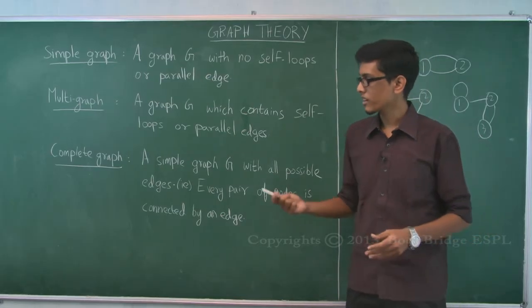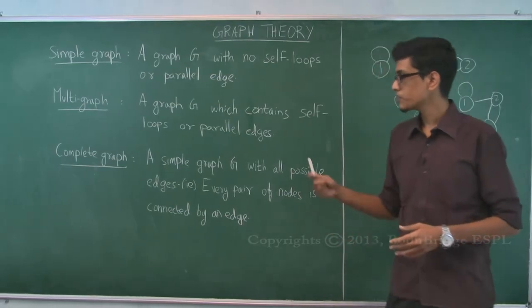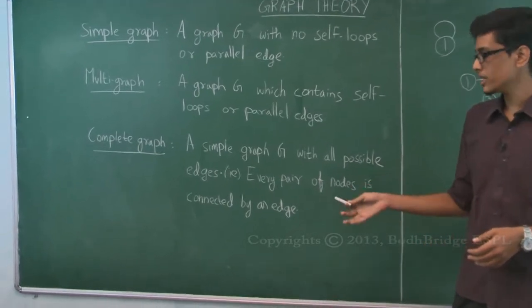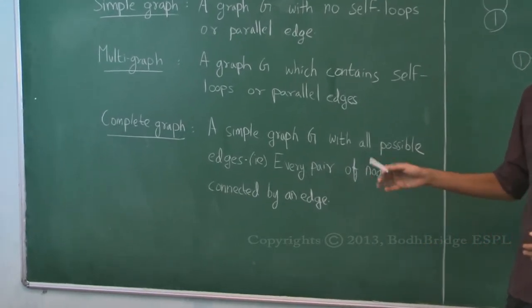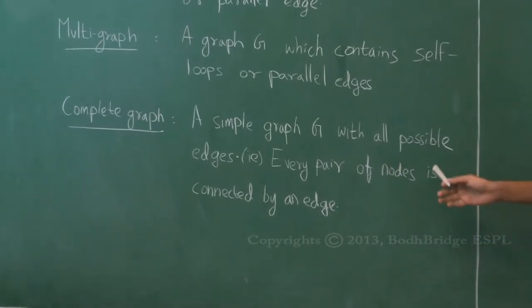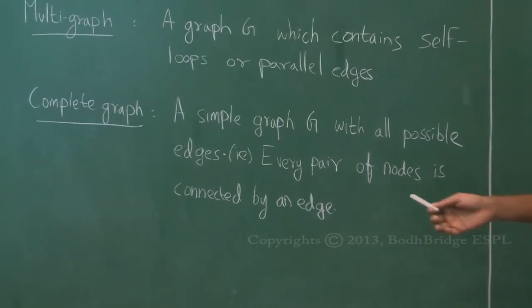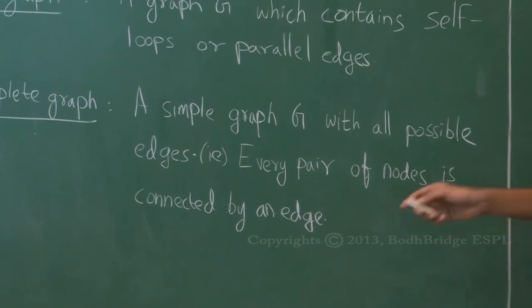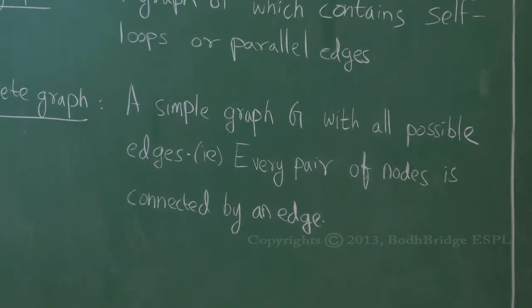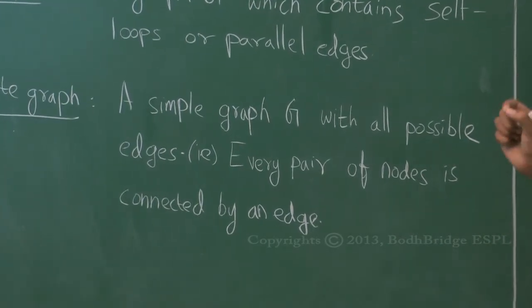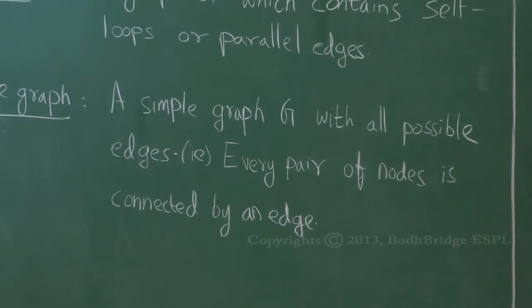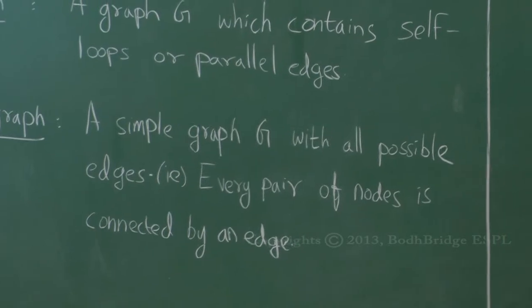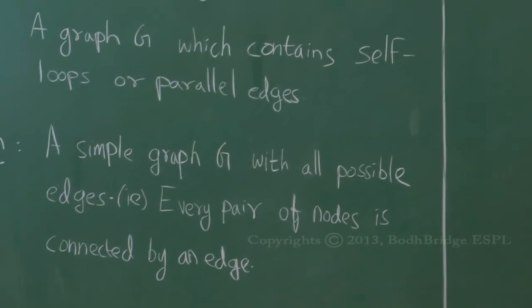A complete graph is a simple graph G with all possible edges — that is, every pair of nodes is connected by an edge. This complete graph is denoted using capital K. Let's see examples of K2, K3, and so on.